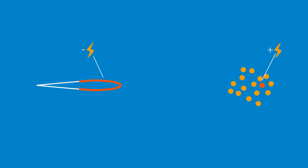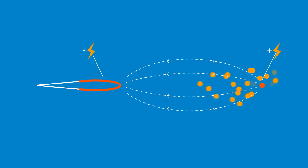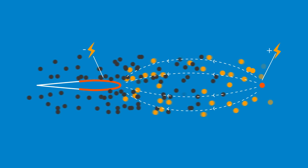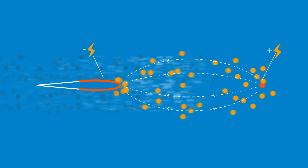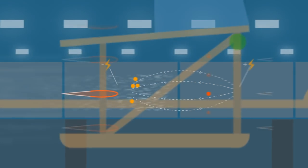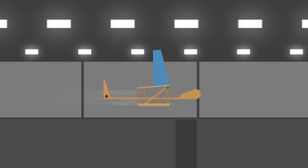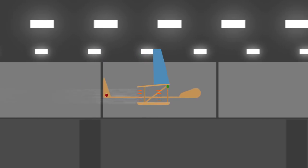An electric field then accelerates these ions from the smaller electrode to the larger one. While moving between electrodes, the ions collide with neutral air molecules transferring momentum. This creates an ionic wind, which produces a thrust force similar to the wind from a propeller, except without the noise or the moving parts.